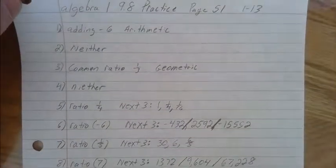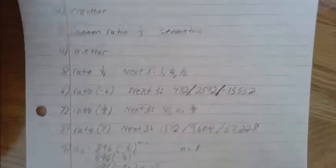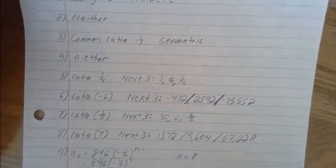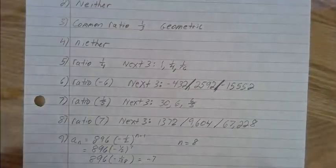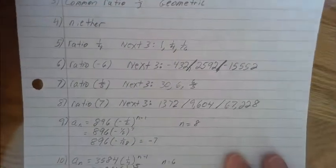Number 1: adding 6, arithmetic. 2 is neither. 3: common ratio 1/3, geometric. 4: neither.